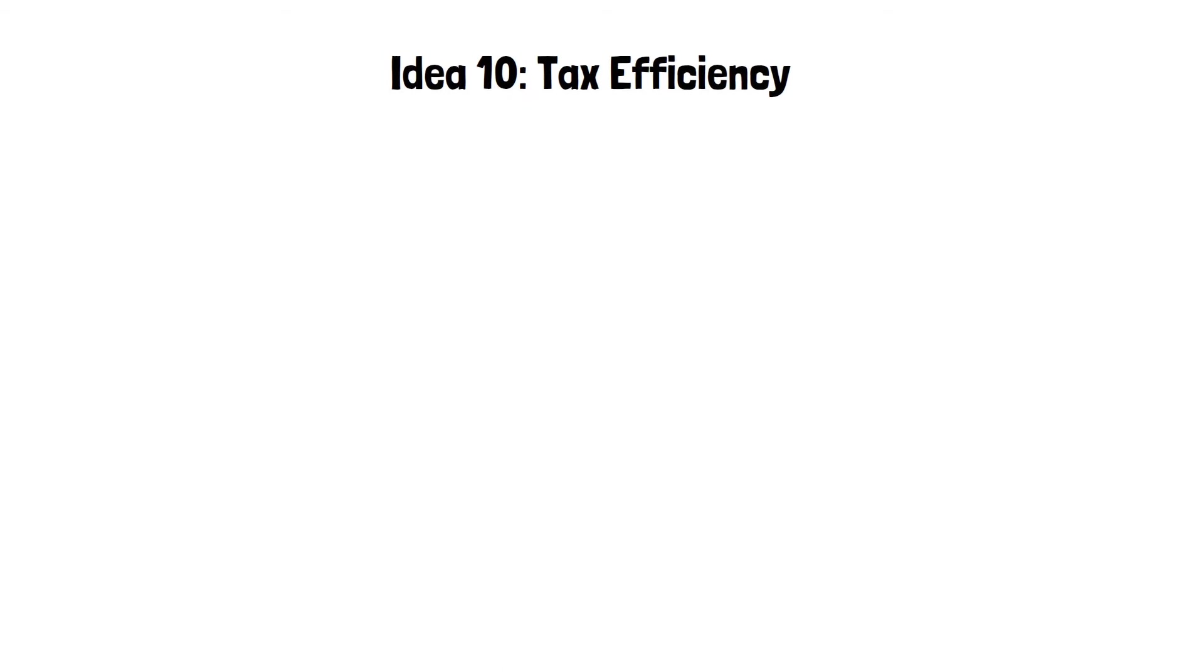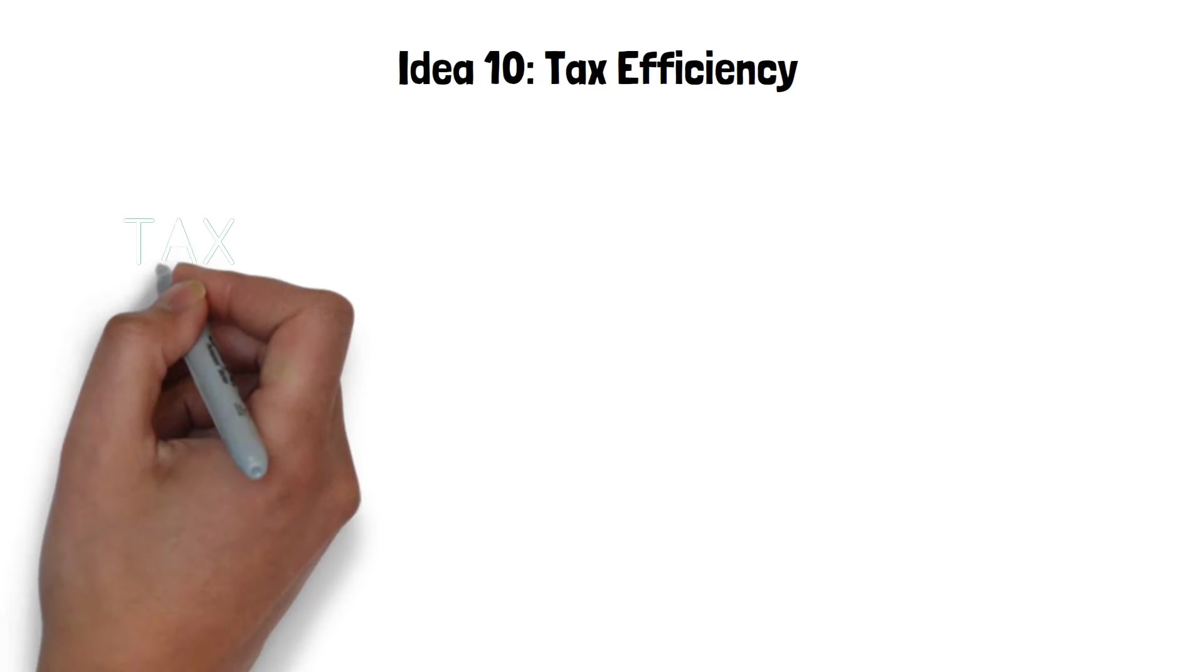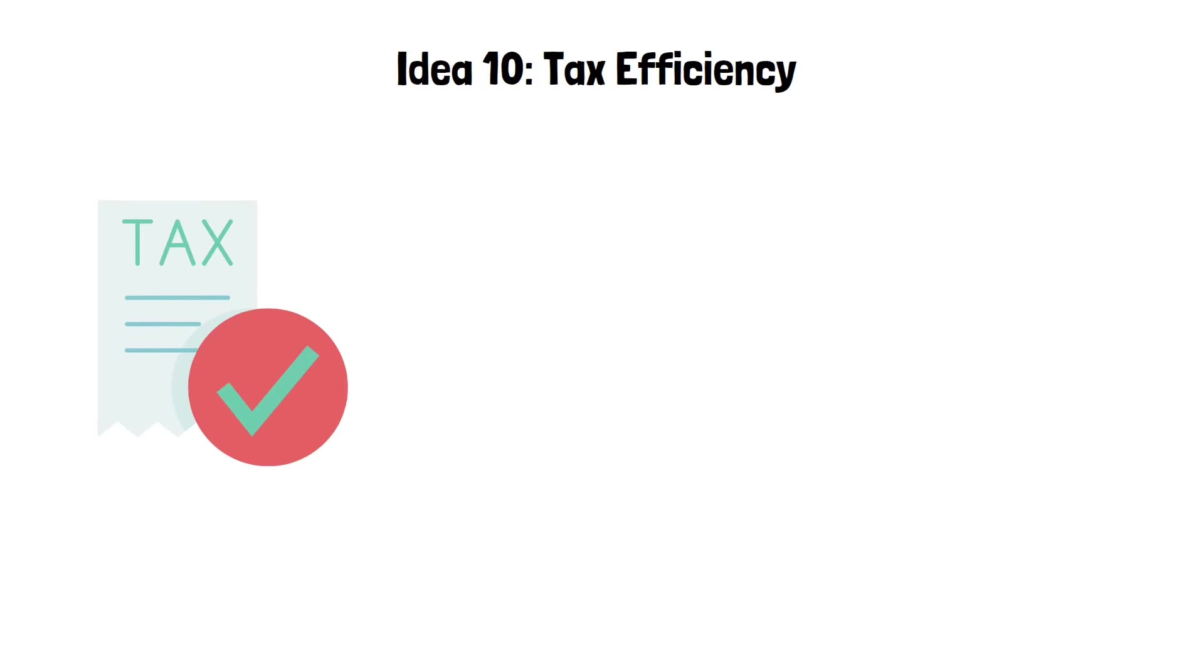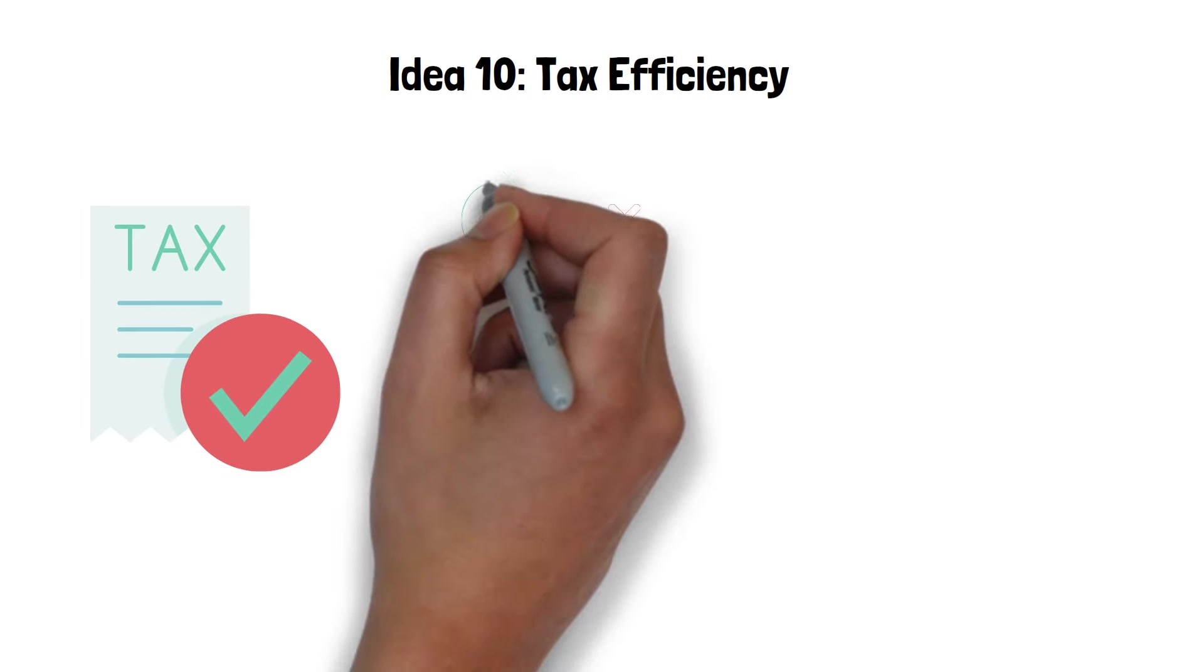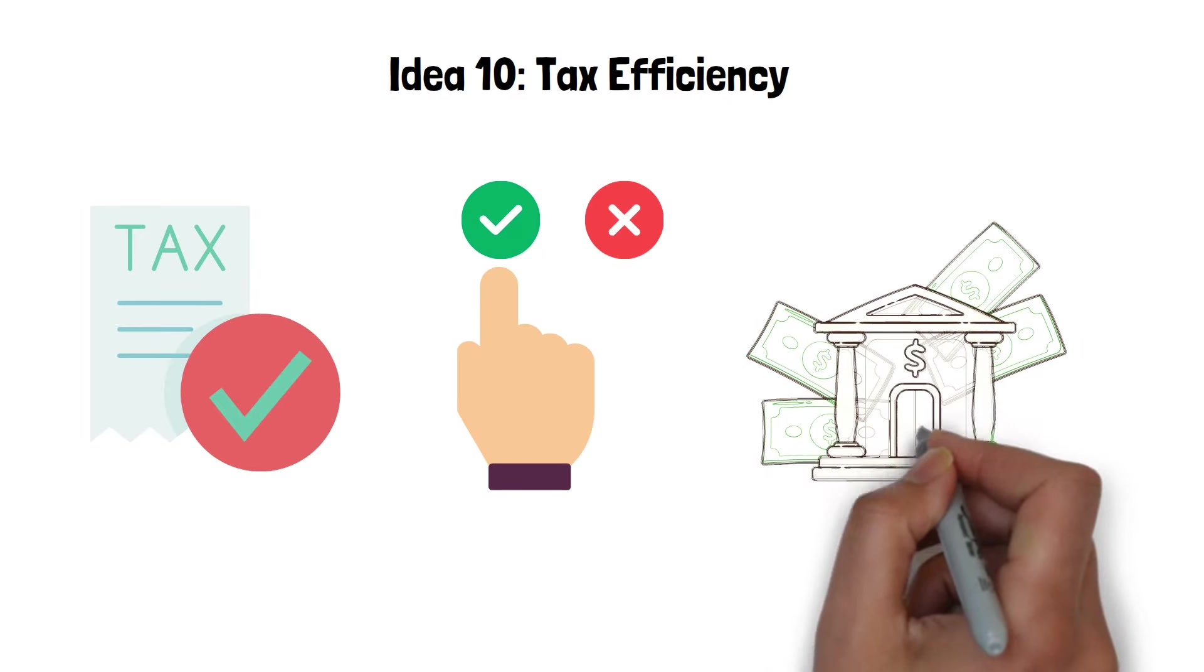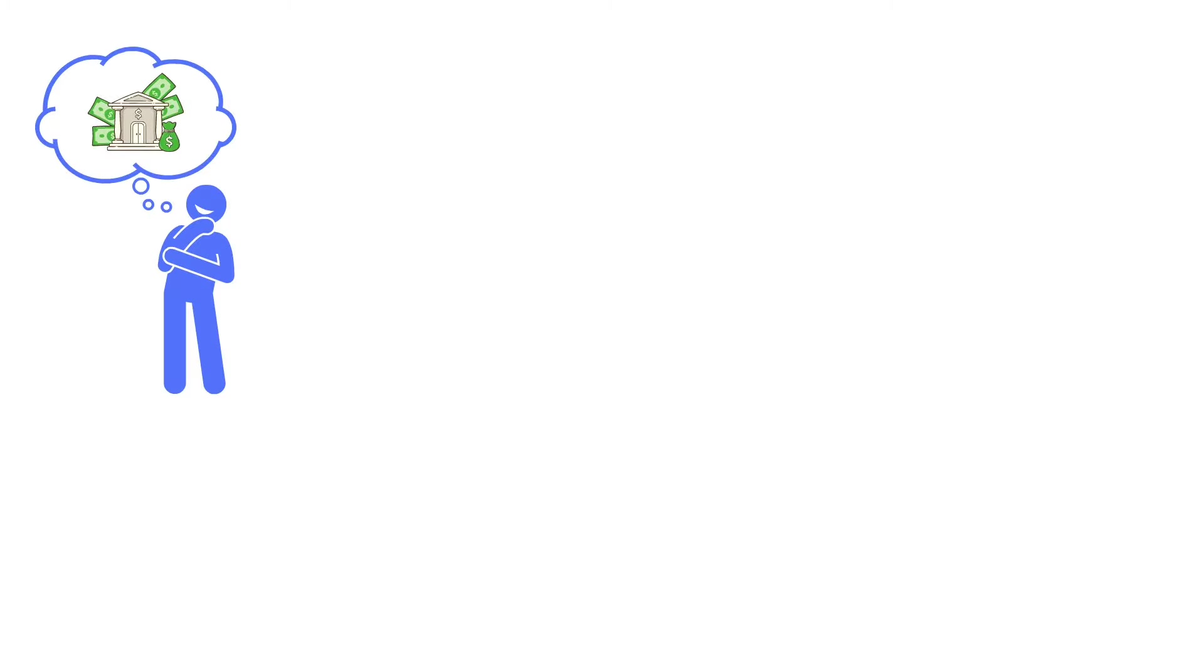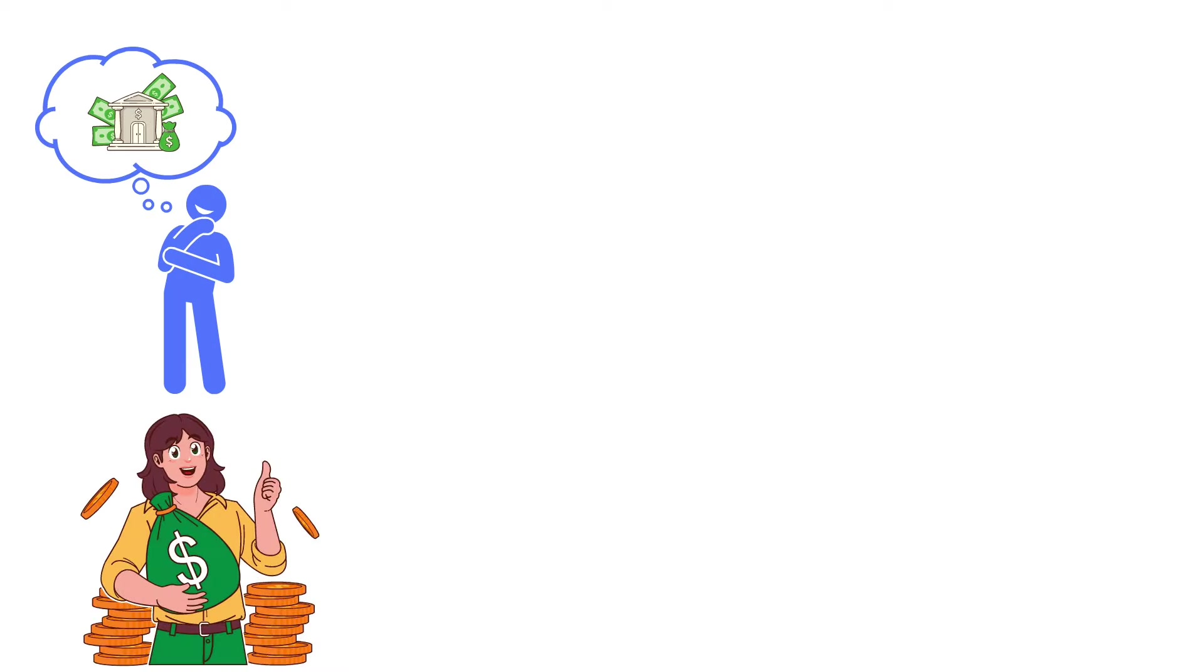Idea 10: Tax efficiency. When it comes to tax efficiency, the idea is to keep as much of your money as possible by legally minimizing the amount of taxes you pay on your investments. This means making smart choices about where you put your money. Now imagine an investment account like a 401k or an IRA. These are special because the money you earn inside them does not get hit with a tax bill each year.